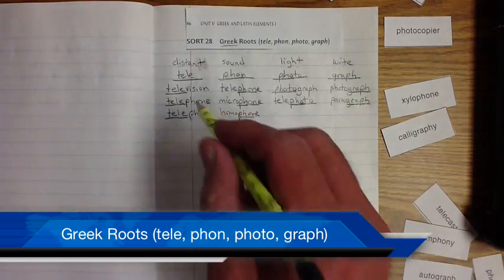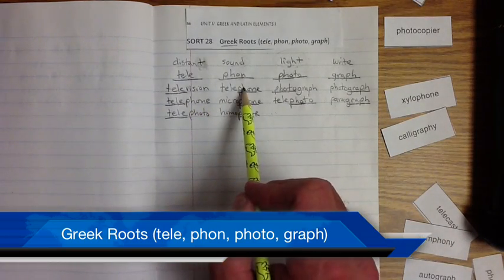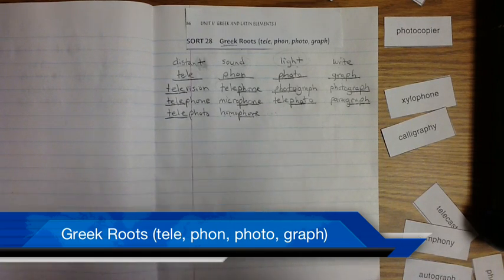Finish these up. If they're in both of them, you need to write them twice. Just like we did here with telephone, telephone, photograph, photograph. Pay attention to what these are saying. Say them. Write them. Learn what they are. Get them done. See ya.